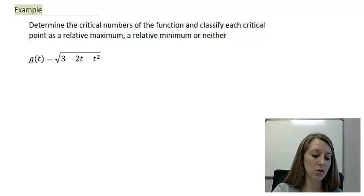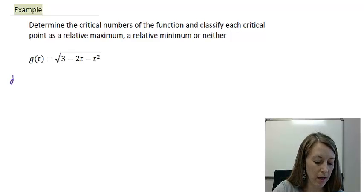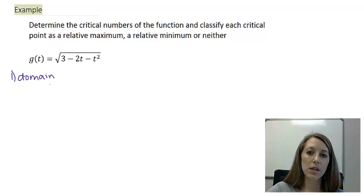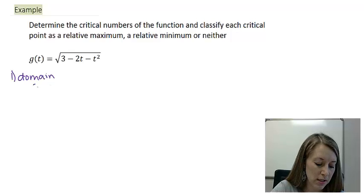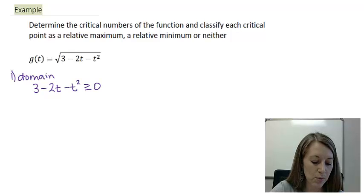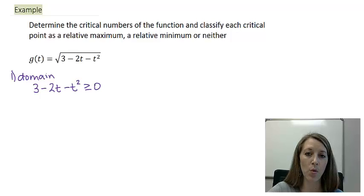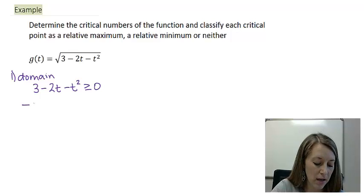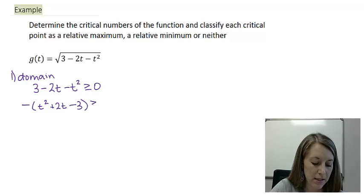The first thing we need to do is find the domain. This function has a square root, so the inside of the square root cannot be negative — it must be greater than or equal to zero. We factor out a negative and rearrange in descending order, giving us t² + 2t − 3 ≥ 0. Since we did not multiply or divide by a negative, the inequality sign stays the same.